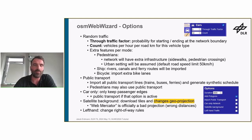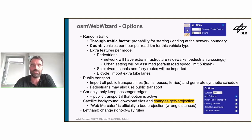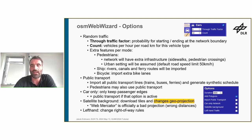There's more: enabling specific modes triggers additional network processing. If you select the pedestrians checkbox, the network will come with extra infrastructure — sidewalks and pedestrian crossings. Also, for roads where OpenStreetMap doesn't record the speed limit, the default will differ depending on whether you activated pedestrians. If you do, urban settings are assumed with a default speed limit of 50 km/h, tailored to Germany, where 100 km/h is the default outside urban settings. If you select the ship mode, rivers, canals, and ferry routes known to OSM will be imported. If you select bicycles, extra bike lanes will be part of your generated network.